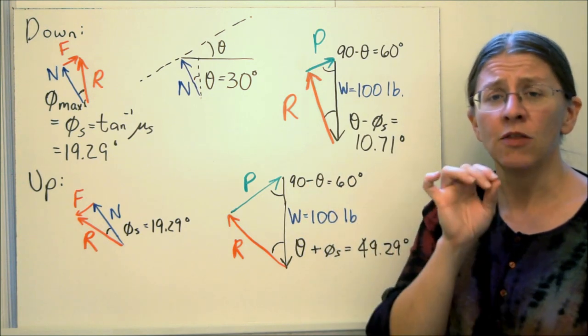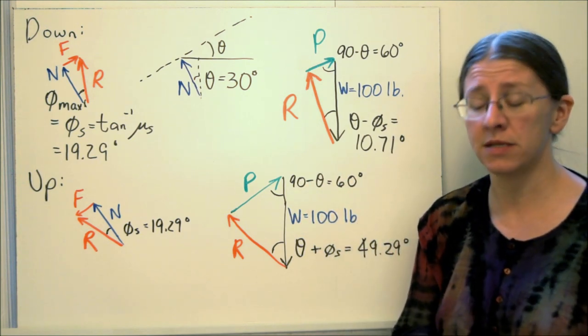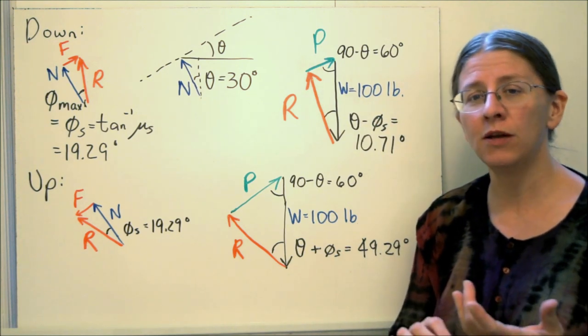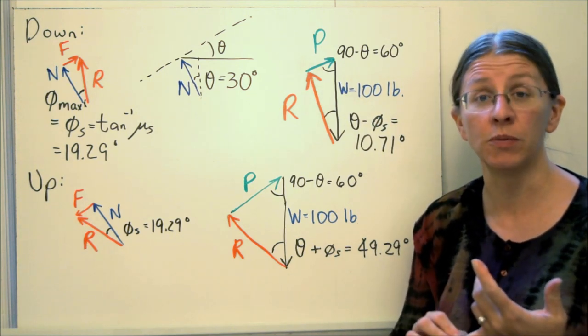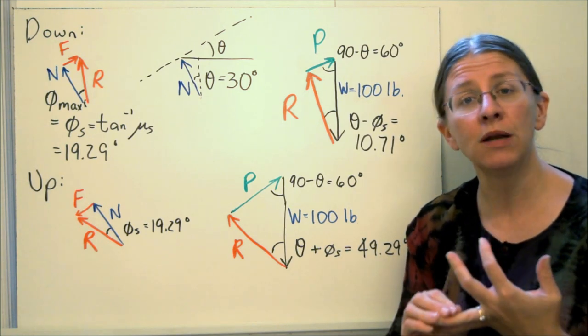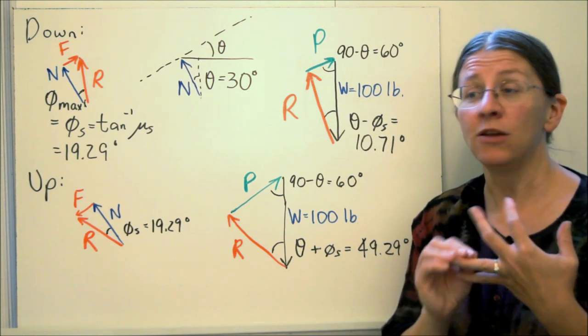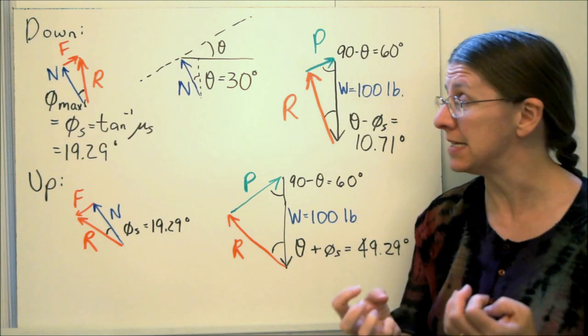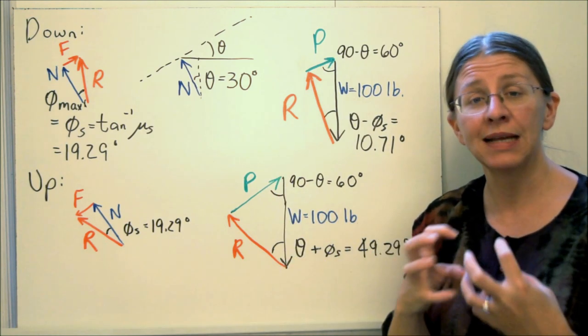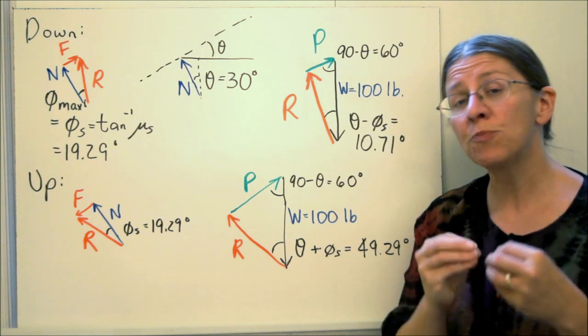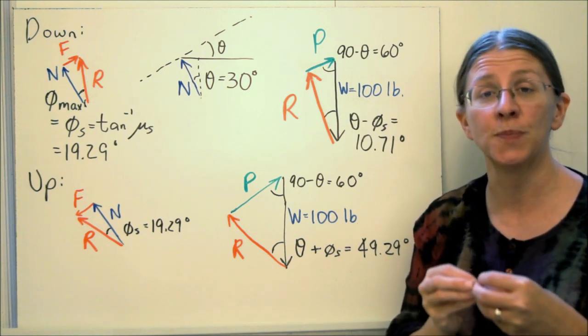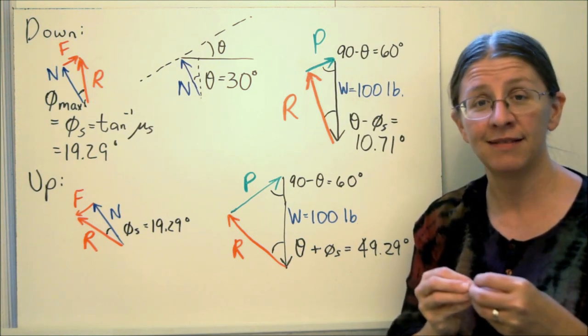So when you're doing these friction problems, the key, the very key is to make sure you have not assumed anything when you're writing your free body diagram and your equations of equilibrium. Then ask yourself, where is it going to slip? Where do I know that motion is impending? You may have to take different cases. It's going up, it's coming down, or it slips here and not here. There may be different cases that you have to take. But that's problem specific and it comes from the answer to the question, where is motion impending? That's your key. Thanks.